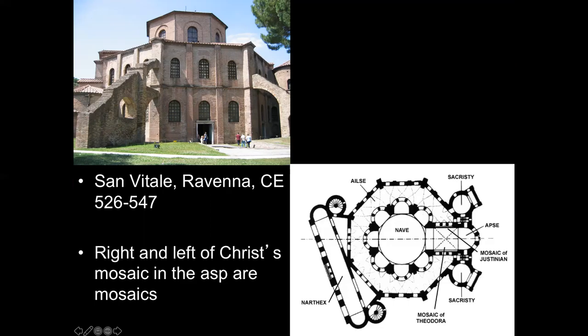This is a good way to understand how hierarchic scale is used in Christian art. Things that are bigger are more important, but also: is it centered? For Christians, what matters is things are evaluated from Christ's point of view in the picture. Things on Christ's right — which from our perspective is on our left — are more important than things on his left. So Justinian's mosaic is on Christ's right, making him more important than Theodora, though both are prominently placed across from each other.